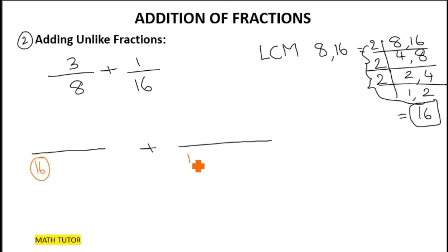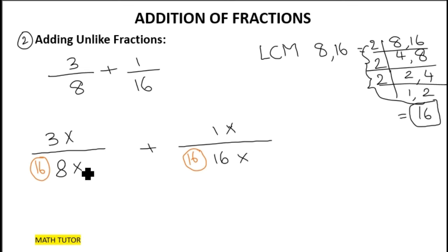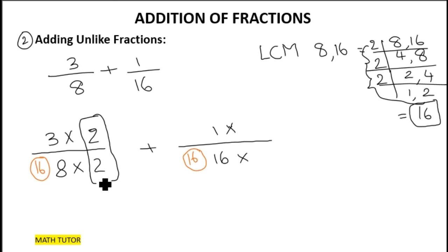I'm keeping the sixteen in a circle so it's easy to understand. Now I'll write my original fractions: three-eighths here and one-sixteenth here as they are. Remember the next step: we have to multiply numerator and denominator by the same number. Here eight is the denominator, but I need to get sixteen. So I multiply eight by two to get sixteen, and since I am multiplying the denominator by two, I have to multiply the numerator by the same number two.